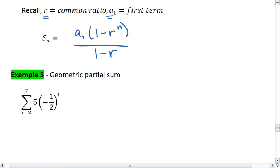In order to use this, we do need to determine what our first term is. So here, a1 will be when we plug in 2. So we get 5 times negative 1 half squared. Negative 1 half squared is 1 fourth, so we get 5 fourths.